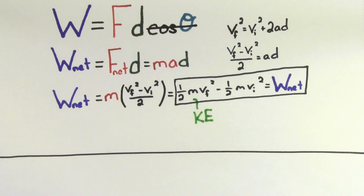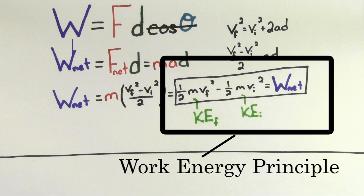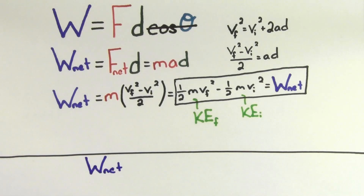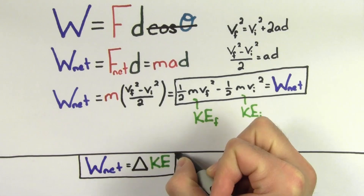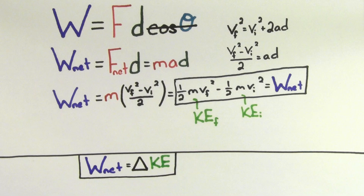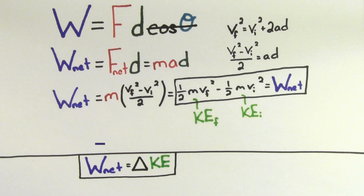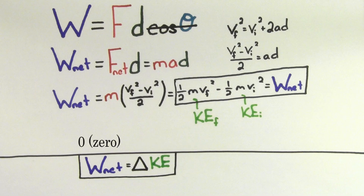This quantity, one-half m times v squared, is what we call the kinetic energy of the object. So the net work done on an object is equal to the change in the kinetic energy of that object. This expression is often called the work-energy principle, since it relates the net work done on an object to the kinetic energy gained or lost by that object. If the net work done is positive, the kinetic energy is going to increase and the object is going to speed up. If the net work done is negative, the kinetic energy is going to decrease, which means it's going to slow down. And if the net work done is zero, the kinetic energy stays the same, which means the object maintains a constant speed.